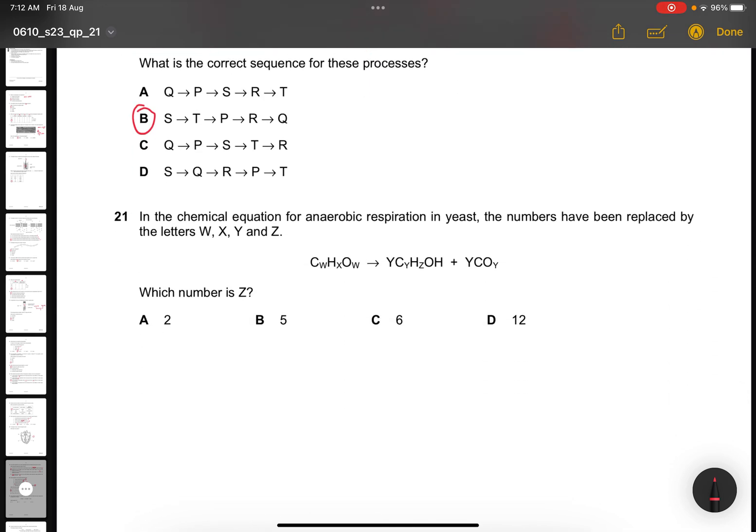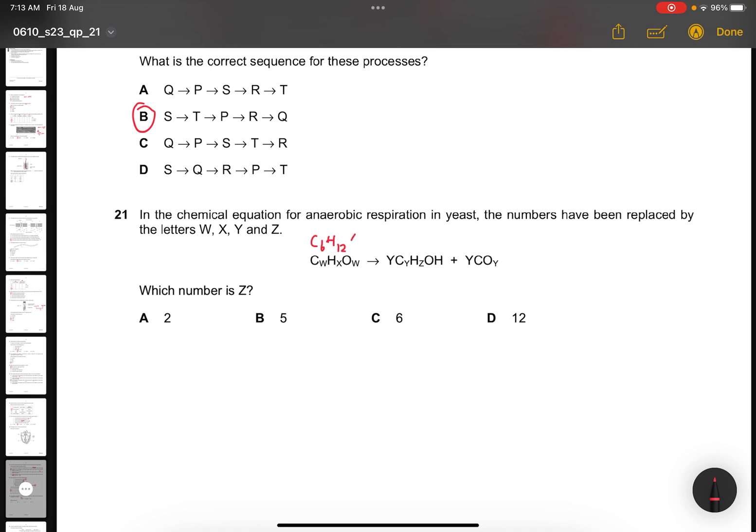Question 21. In the chemical equation for anaerobic respiration of yeast, the numbers have been replaced by the letters W, X, Y, and Z. Which number is Z? It's a tricky question. Since it's yeast, it will release ethanol. So it's 2C2H5OH plus 2CO2. So the answer for Z is 5.